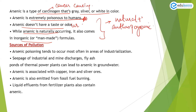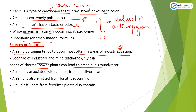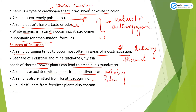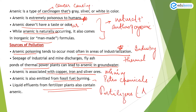The sources of arsenic pollution tend to occur most often in areas of industrialization — mine discharge and fly ash from thermal power plants are important sources of arsenic pollution leading to arsenic in groundwater. It is associated with copper, iron, and silver ores. So mining, thermal power plants, industrial activity, and fossil fuel burning are key sources. Petrochemicals and fertilizers also contain arsenic, so agricultural runoff is also responsible for arsenic contamination of water bodies.